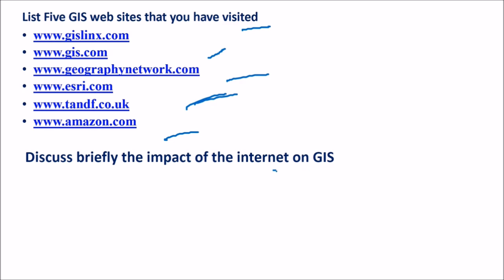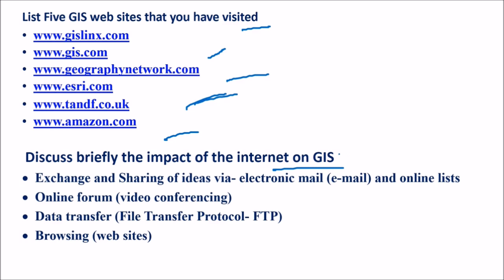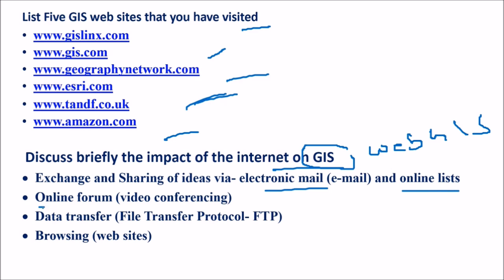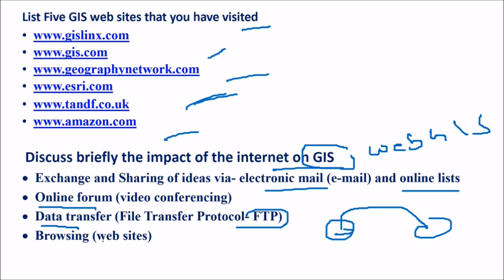Discuss briefly the impact of internet on GIS. The latest developments are in web GIS. Exchanging and sharing of ideas via electronic mail, email, and online lists — these are impacts of internet on GIS. There are various online forums where problems can be resolved. You have data transfer using FTP, file transfer protocol, to transfer data from one machine to another. Then browsing various websites where URLs are available to browse GIS content, applications, and GIS itself.